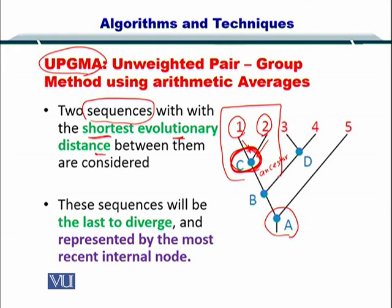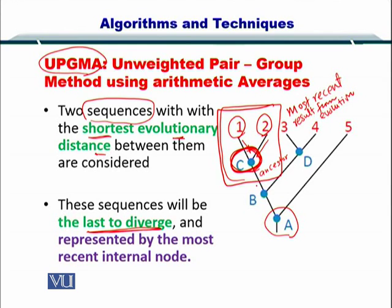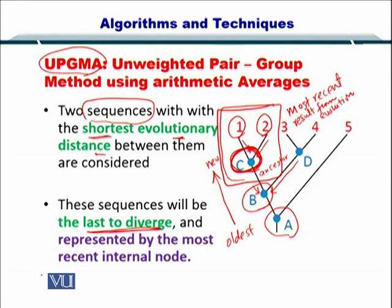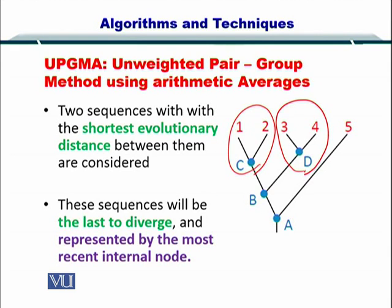You need to understand that these sequences are the last to diverge, which means that they have evolved most recently — this is the most recent result of evolution. Some things have happened before that, as you can see in the ancestor B. So you organize all of your sequences by using pairwise sequence alignment and then link them up through the internal nodes.